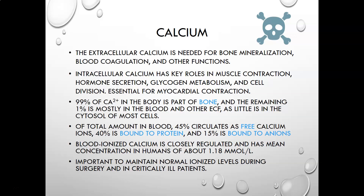Of the total calcium in blood — that 1% — 45% circulates as free calcium ions, 40% is bound to protein, and 15% is bound to anions. Blood ionized calcium is closely regulated and has a mean concentration in humans of about 1.18 millimoles per liter. Ionized calcium is important to maintain during surgery and in critically ill patients, so those ionized calcium levels are analyzed in those populations.